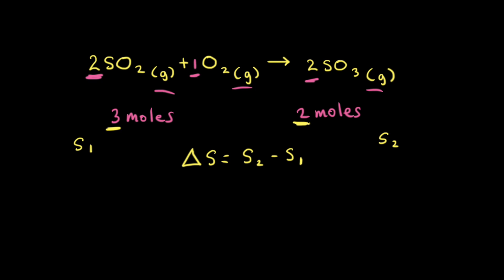A decrease in the number of moles of gas means a decrease in the number of possible microstates, which means a decrease in the entropy. Therefore, S2 is less than S1. For the change in entropy, if S1 is greater than S2, we're subtracting a larger number from a smaller number, which means the change in entropy for this reaction — delta S — will be negative.